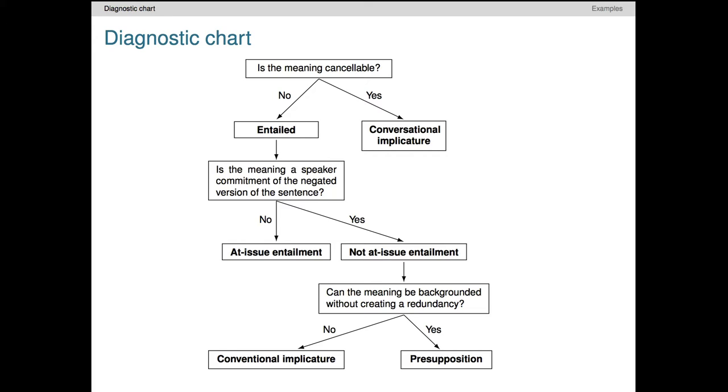We assume there is some sentence S that we're analyzing, and that there is some aspect of S's meaning, let's call that aspect M, that we are trying to diagnose. At the top, we have the question: is the meaning cancelable? Recall that cancelability means expressing both S and the negation of our target meaning M, and seeing whether the result sounds contradictory.